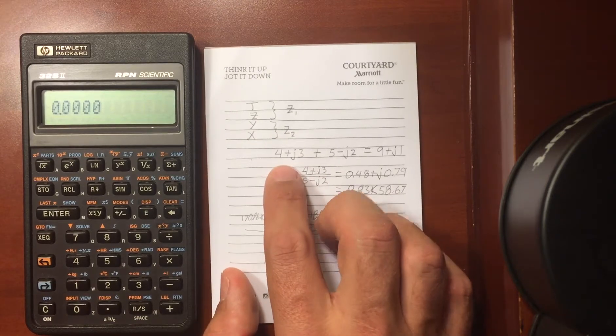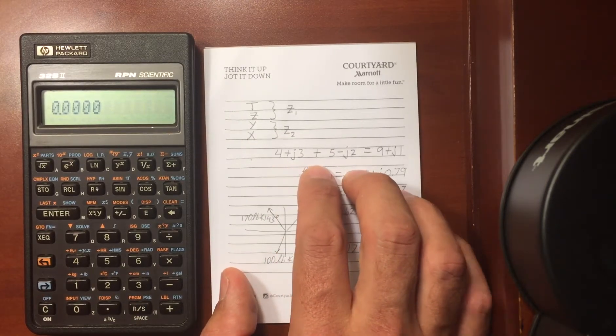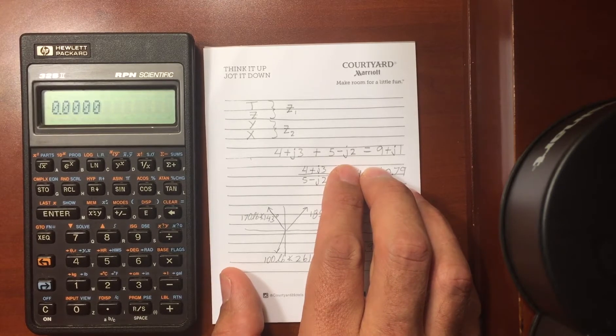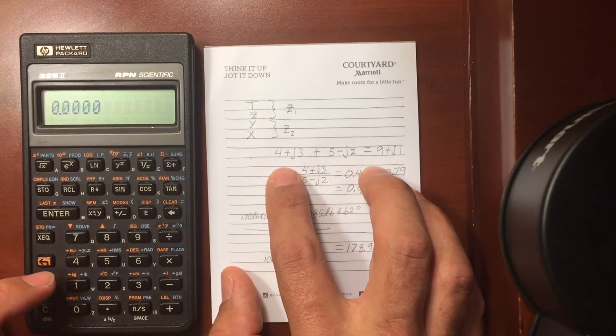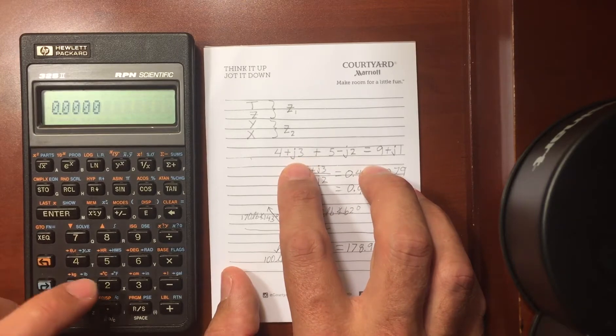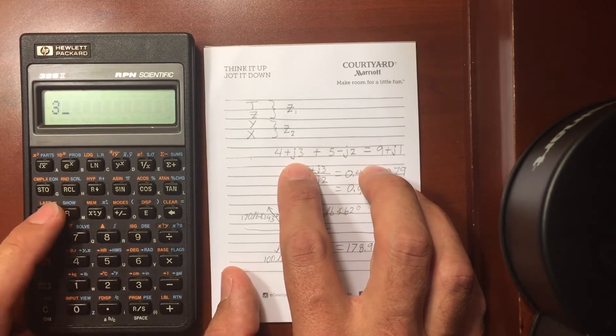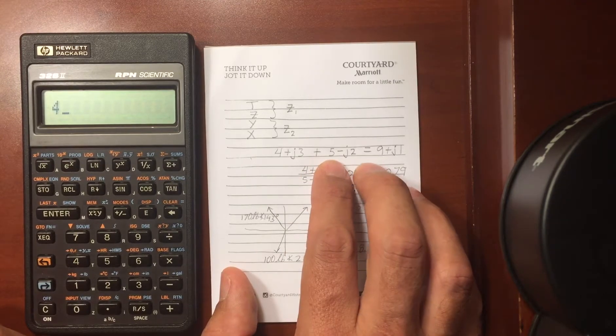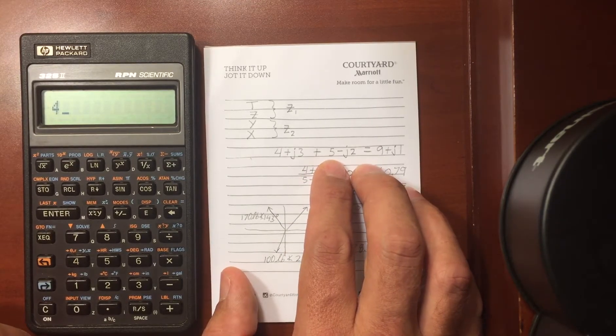So if I wanted to enter 4 plus J3 plus 5 minus J2, I'm an engineer so I'm using J, then I would do first the imaginary part. So I do 3, enter 4, I've got my first number, and I'm going to enter in the second number before I enter in the operation.